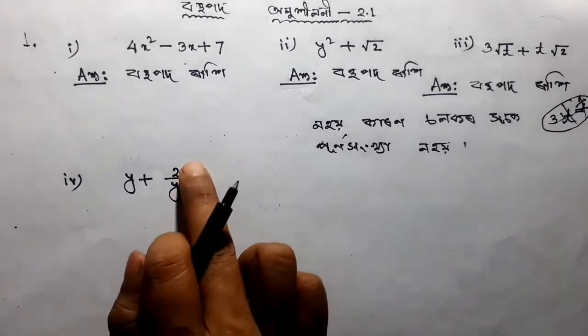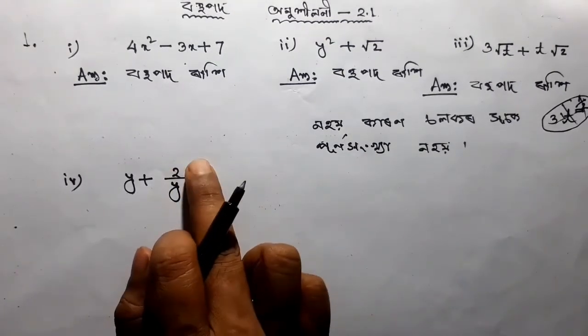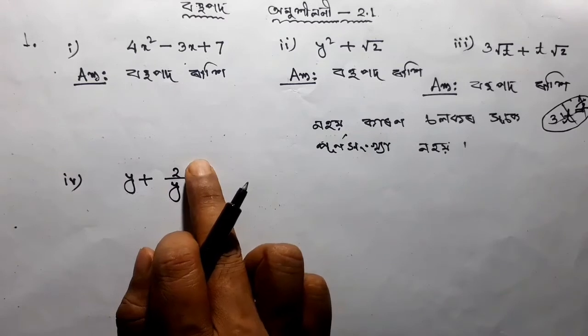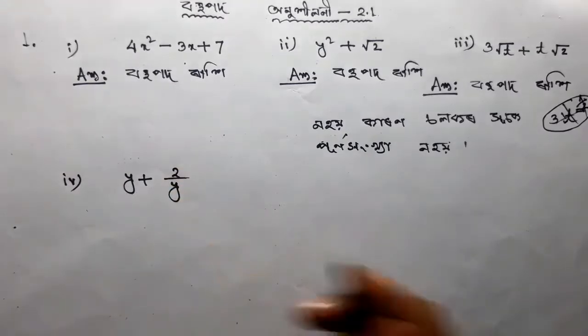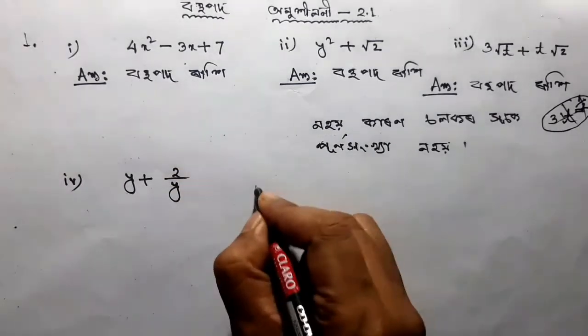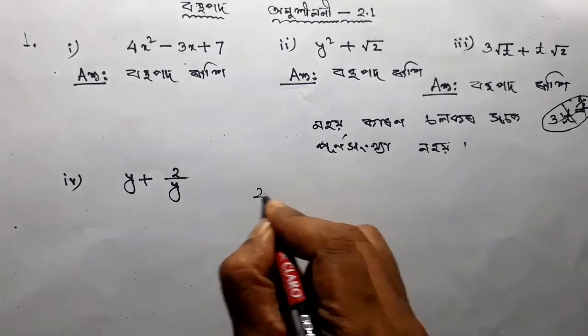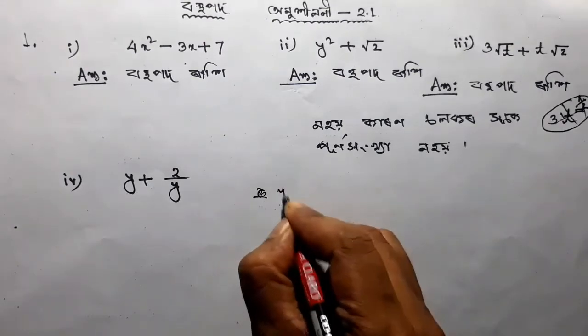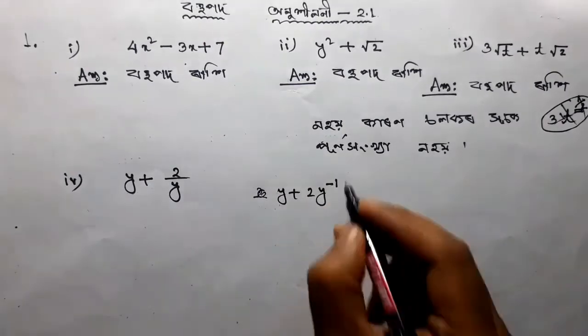This is y². y² to the power minus 1. Twice y² to the power minus 1. Twice y plus 2y² to the power minus 1.